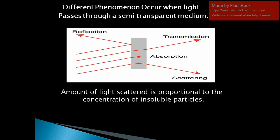Different phenomena occur when light passes through a semi-transparent medium. Suppose this is a semi-transparent medium or sample solution. When light passes through the sample solution, some radiation will be reflected, some will be absorbed, some will be transmitted, some will be detected, and some will scatter from the suspension solution.